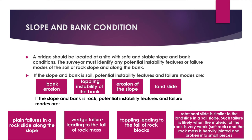If the slope and bank is soil, potential instability features and failure modes include: toppling instability of the bank, erosion of the slope, and landslide. If the slope and bank is rock, potential instability features and failure modes include: plane failures in a rock slide along the slope, wedge failure leading to the fall of rock mass, toppling leading to the fall of rock blocks, and rotational slide similar to a landslide in a soil slope. Such failure is likely when the rock material is very weak (soft rock) and the rock mass is heavily jointed and broken into small pieces.